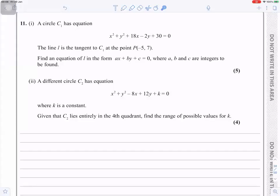Question number 11. A circle C1 has equation x squared plus y squared plus 18x minus 2y plus 30 equals 0. The line L is the tangent to C1 at the point P(-5, 7). Find an equation of L in the form ax plus by plus c equals 0, where a, b, and c are integers to be found.